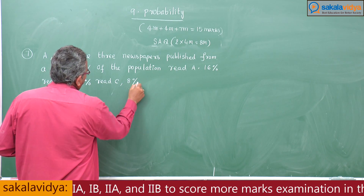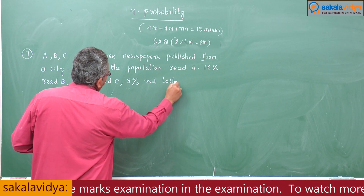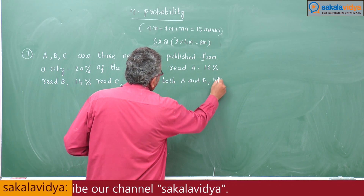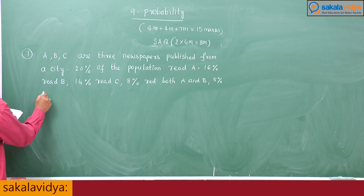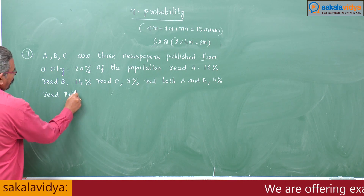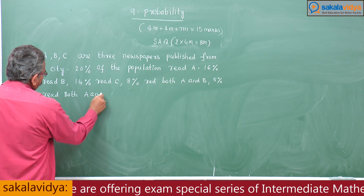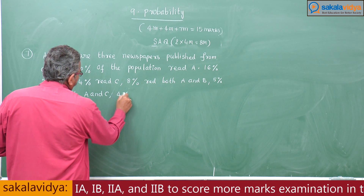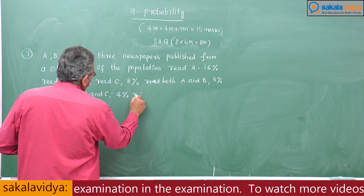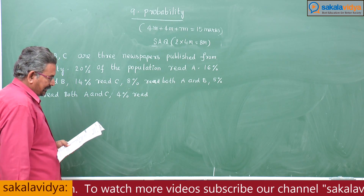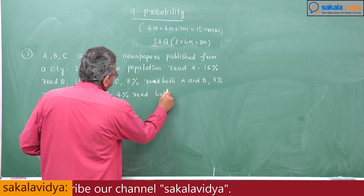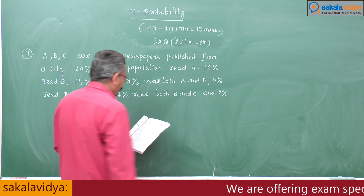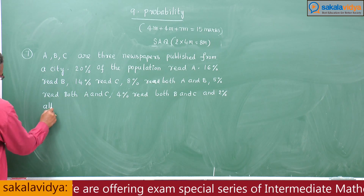8% read both A and B, 5% read both A and C, 4% read both B and C, and 2% read all three newspapers.